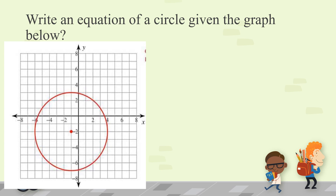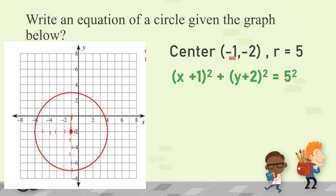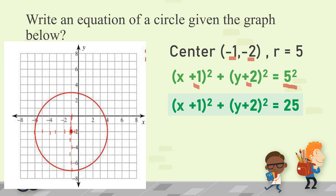Example number 2: Write an equation of a circle given the graph. First, find the center. The x-coordinate is at negative 1, and the y-coordinate is at negative 2, so the center is at (−1, −2). For the radius, count from the center: 1, 2, 3, 4, 5 — so the radius is 5. Substituting into the formula: since h is negative 1, it becomes positive 1; since k is negative 2, it becomes positive 2. This gives x plus 1 squared plus y plus 2 squared is equal to 5 squared, which simplifies to x plus 1 squared plus y plus 2 squared is equal to 25.